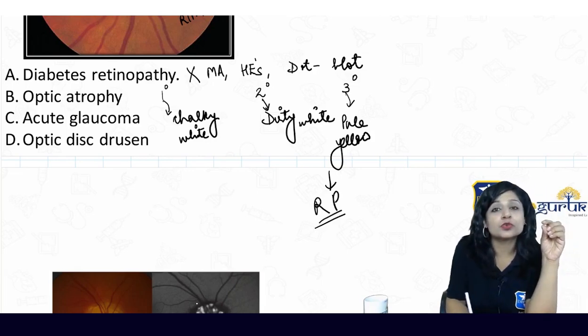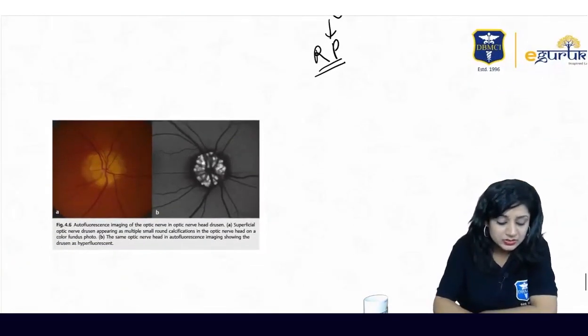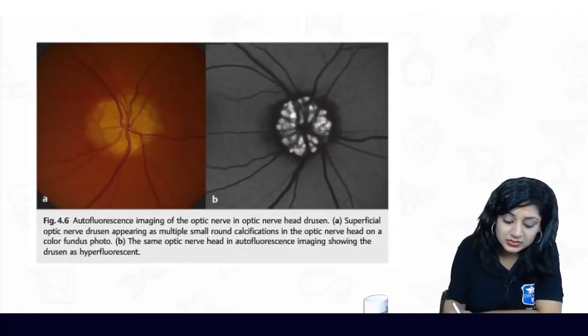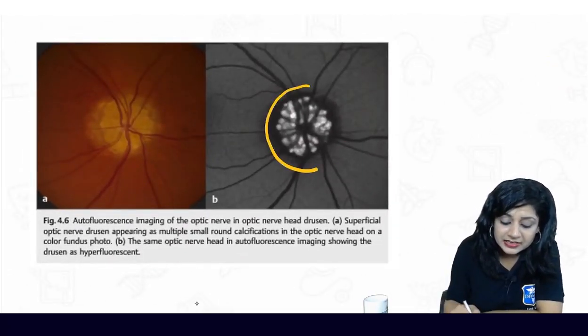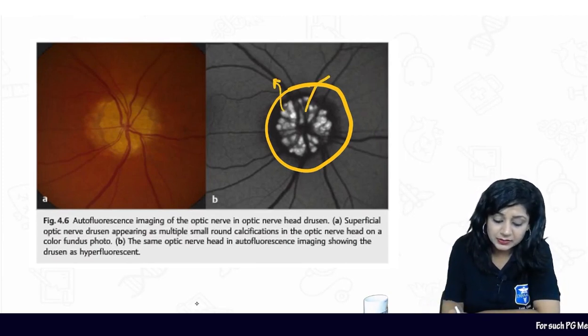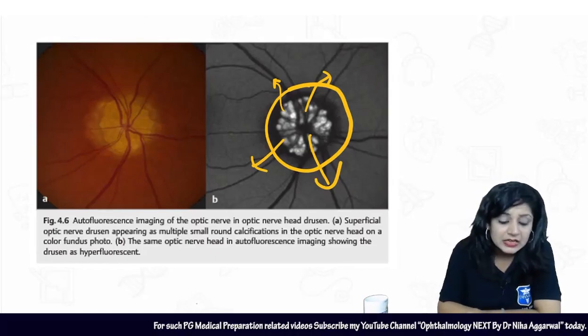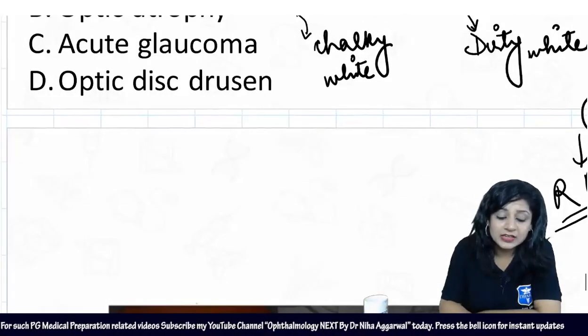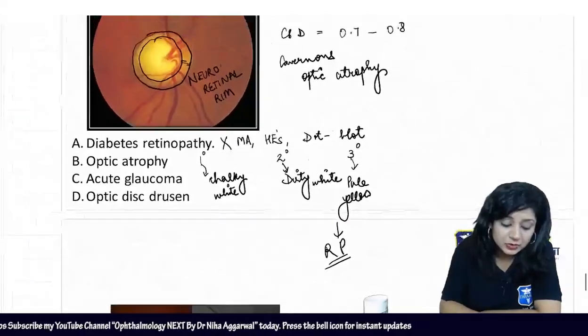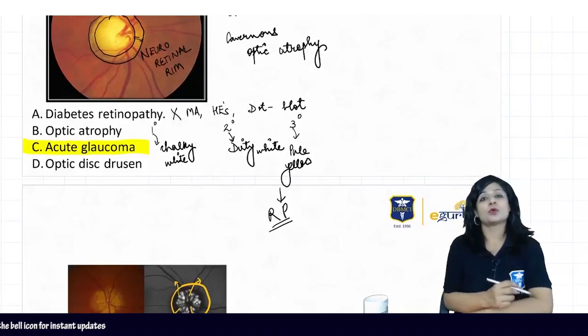Drusen - can you see these autofluorescent lesions shining over the optic disc? Obviously, it is not drusen, it's not optic atrophy (you will not get cupping in cases of optic atrophy), and it's not diabetic retinopathy. Therefore, the answer to this question is acute glaucoma.